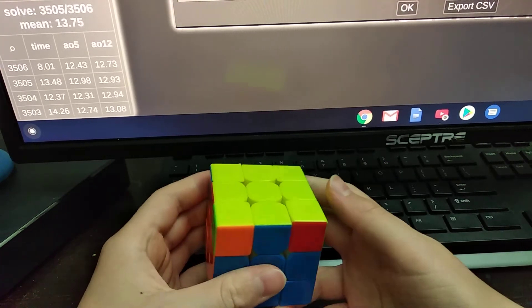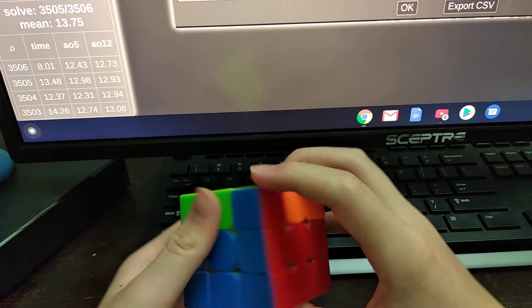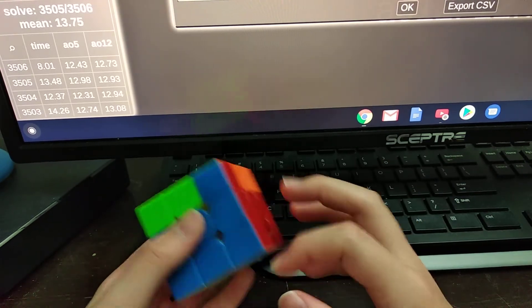Then I have this OLL, which leaves me with a Y perm, and I see that it'll be a U2 AUF, because this corner is solved.